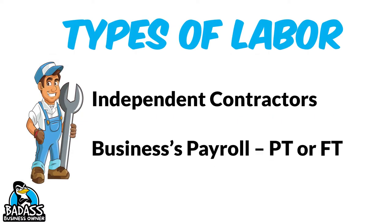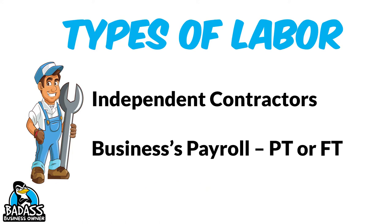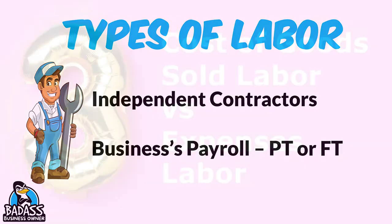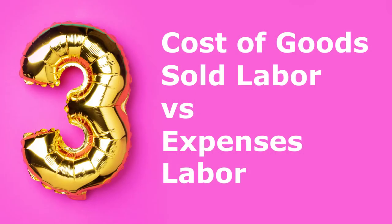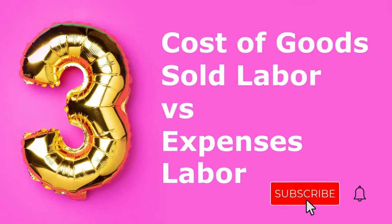Those folks that work for the company on a regular basis will be paid out in the business's payroll. They might be full-time or part-time, but they are given specific job roles and work on a regular basis. These folks might be in your cost of goods or they might be in your operational expenses depending upon the type of job they have. Which brings us to the third thing to consider: cost of goods labor versus expense labor.